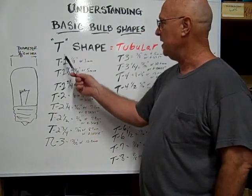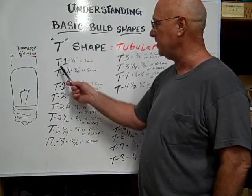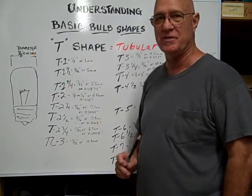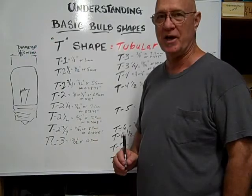So if you have a bulb that has a T in front of a number, the T stands for tubular shape, and the number after it is the number of eighths of an inch in diameter of the glass envelope.